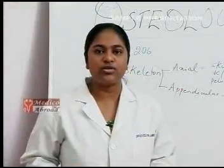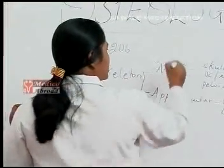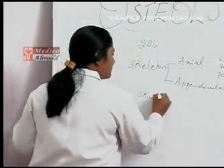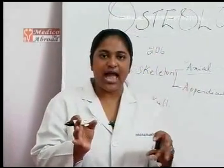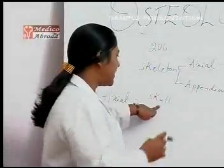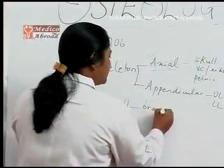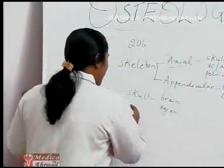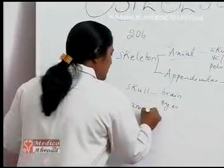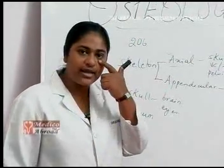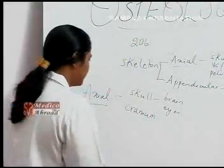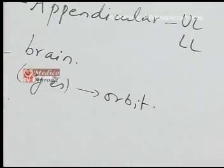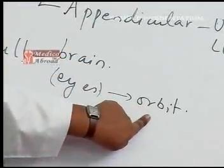Let's look at how these bones are actually arranged. First, we have the axial skeleton. The skull is like a box and it encloses certain structures — the brain and the eyes. The cavity inside the skull is called the cranium or cranial cavity and that contains the brain. The part of the skull that contains the eyes is called the orbit or orbital cavity.